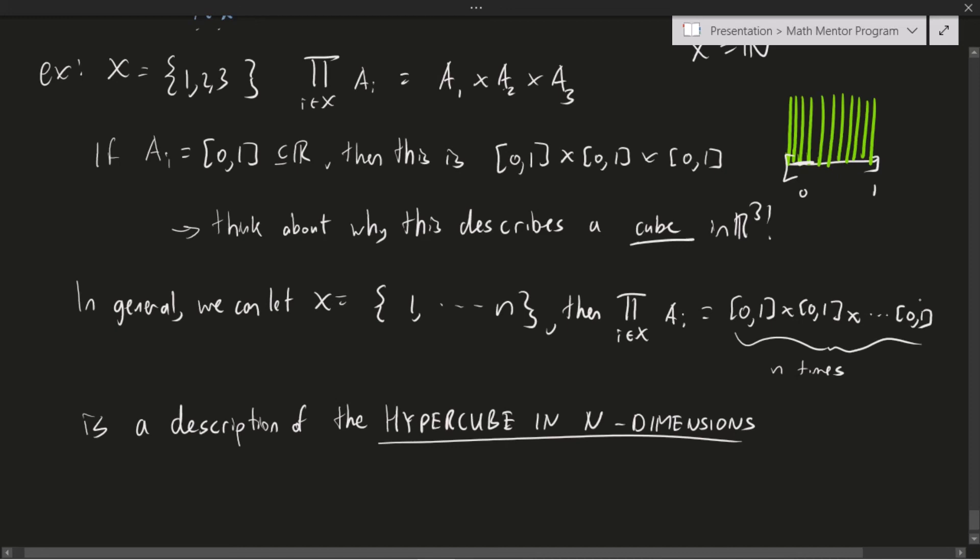A more interesting extension of this is being able to describe the hypercube in n dimensions. So if my enumerating set X is 1 all the way up until n, then the pi product is just going to be [0, 1] cross [0, 1] cross [0, 1] all the way up until the nth time where we repeat [0, 1]. And this is a way of describing the hypercube in n dimensions, which is just a cube, but in higher, you know, higher dimensions, a four dimensional, a five dimensional, an n dimensional cube. Okay. So as you can see, products sets are going to become very important when we start talking about topology, but they actually have a lot of use in set theory as well. And we'll start exploring this next time when we talk about the Zermelo-Fraenkel axioms for set theory.